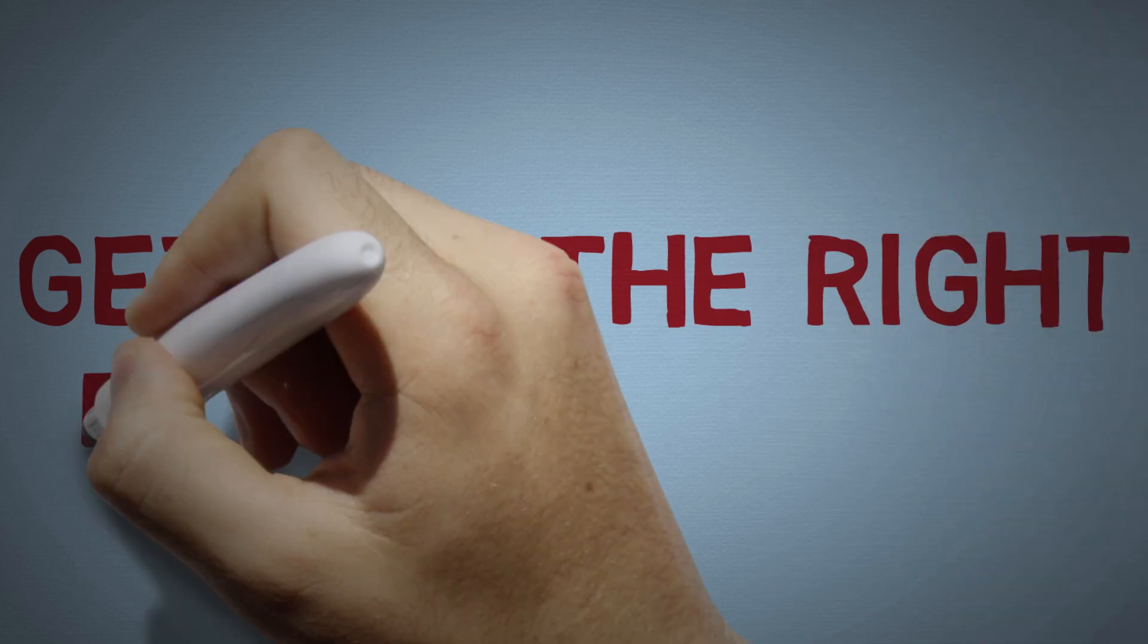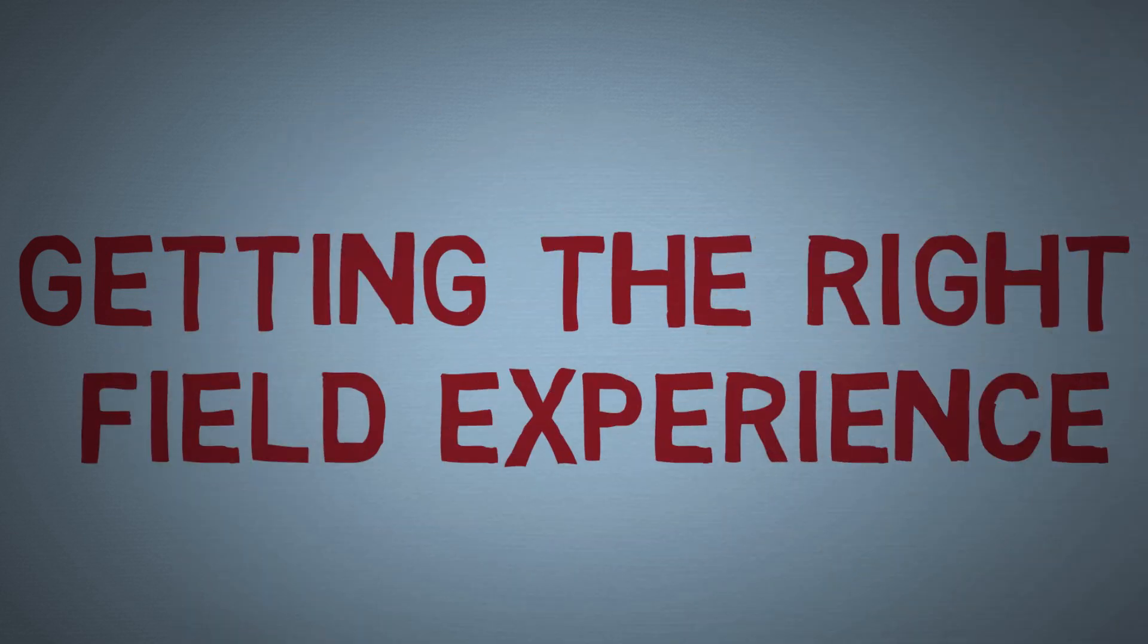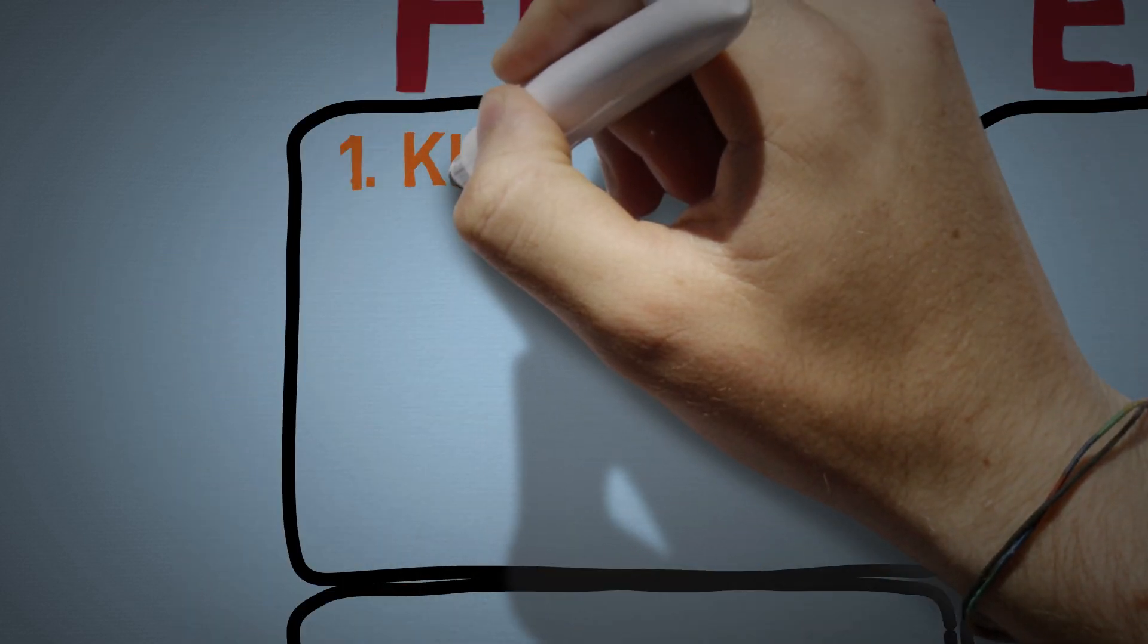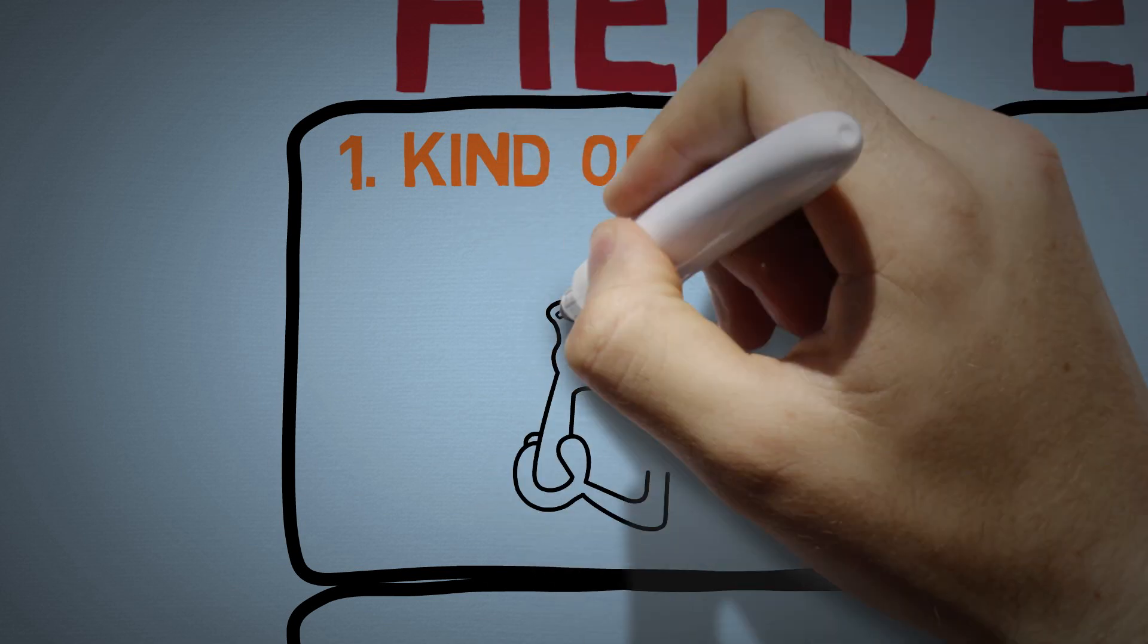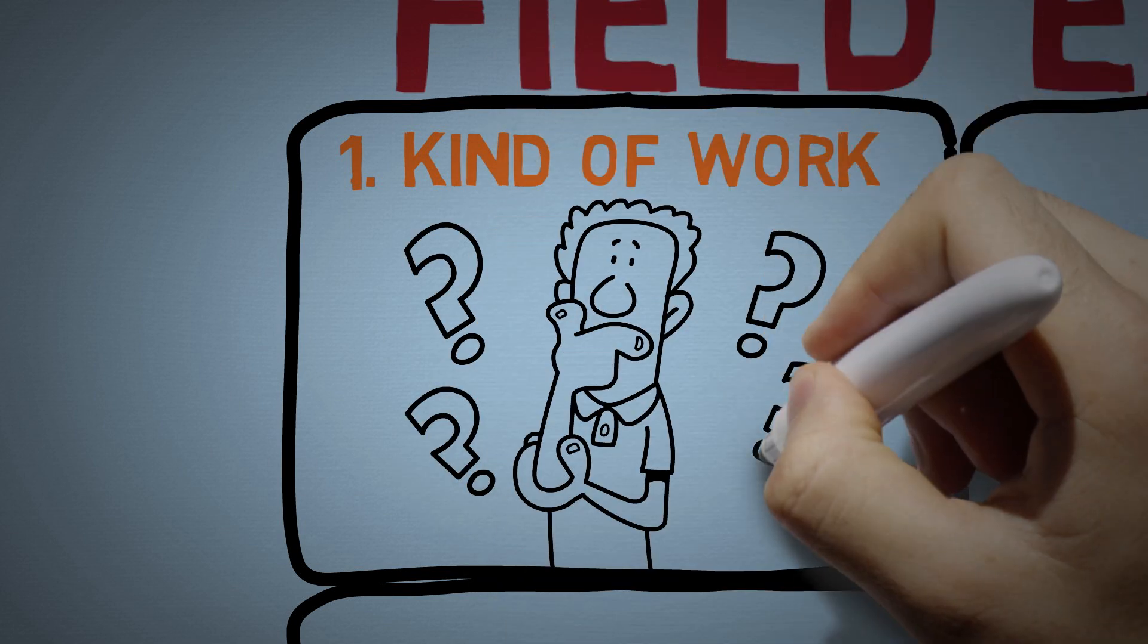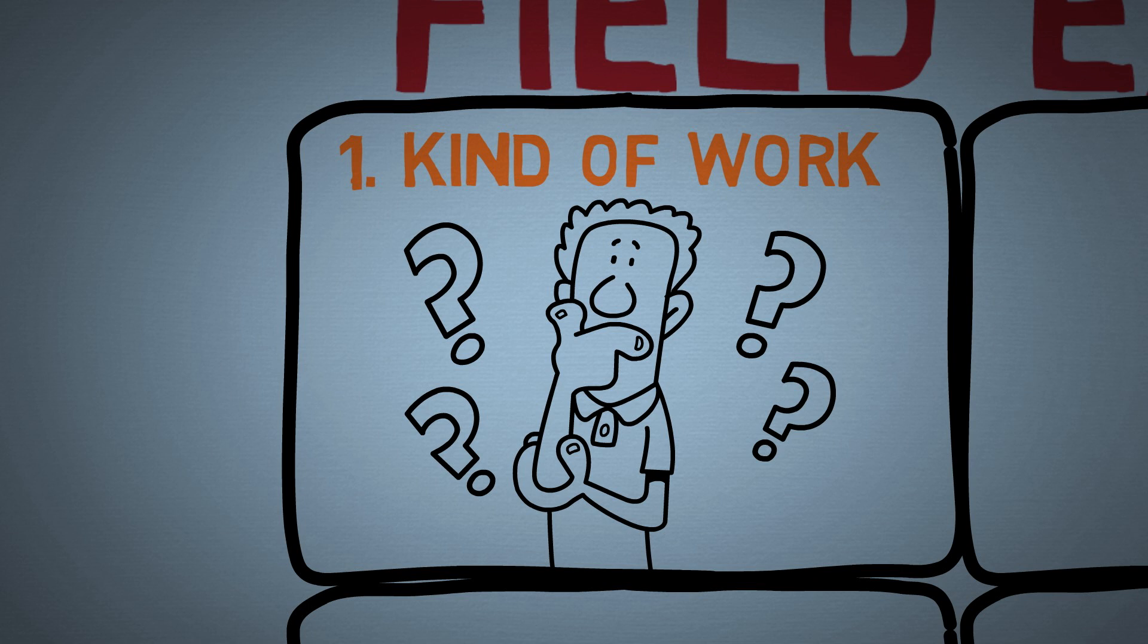A few things to keep in mind when looking at possible organizations to work with. One, what kind of work and learning will they set up for you to do? Some organizations give volunteers responsibilities that are way outside their area of competency. And this can lead to them doing more harm than good. And by the way, this does actually happen.